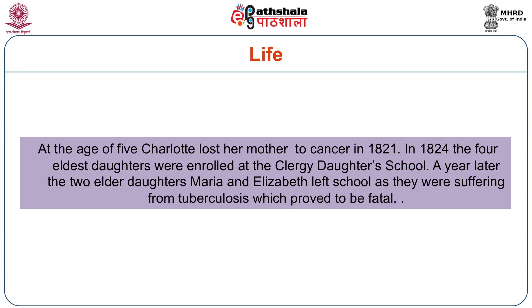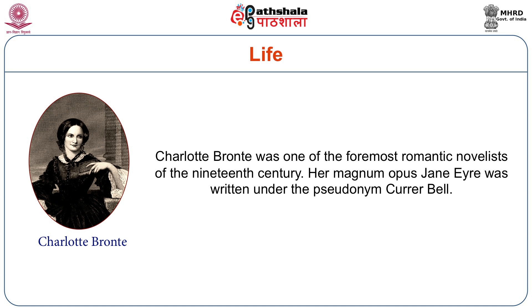This is a message given by Charlotte Brontë to the world through the novel Jane Eyre. At the age of 5, Charlotte lost her mother to cancer in 1821. In 1824, the four eldest daughters were enrolled at the Clergy Daughters' School. A year later, the two elder daughters, Maria and Elizabeth, left school as they were suffering from tuberculosis, which proved to be fatal.